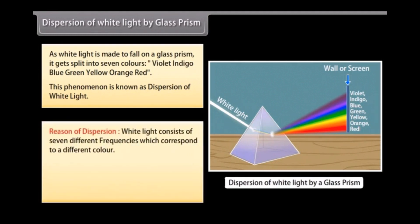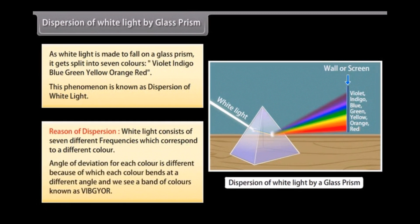White light consists of seven different frequencies, each corresponding to a different color. The angle of deviation for each color is different, because of which each color bends at a different angle and we see a band of colors known as a spectrum.